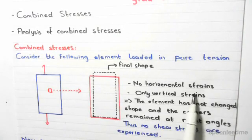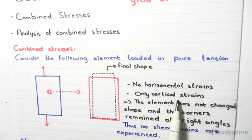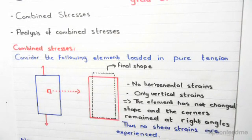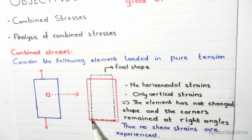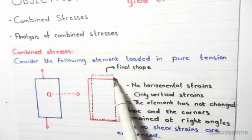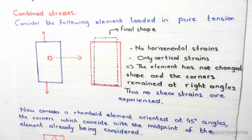So what are the properties? There was no horizontal strains, only vertical strains as you can see by the elongation. The element has not changed shape and the corners, this is important, the corners remained at right angles. So this corner here, this one, this one and this one are also at right angles. Now this means that there are no shear strains experienced when the corners remain at right angles. Right angles, no shear strains, that's what it is.